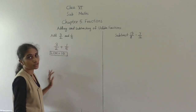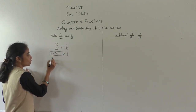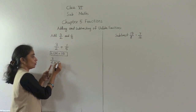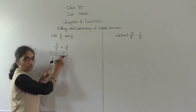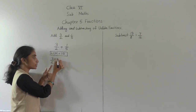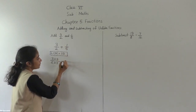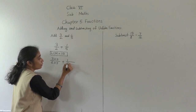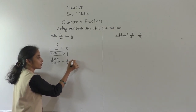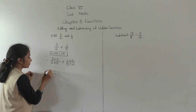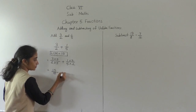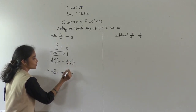We have to make the denominator 10. For 3 upon 2: 5 twos are 10, so multiply numerator and denominator by 5. For 1 upon 5: 2 fives are 10, so multiply numerator and denominator by 2. This gives us 15 upon 10 plus 2 upon 10.